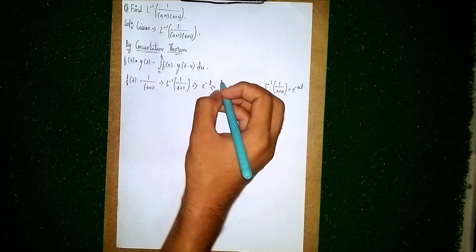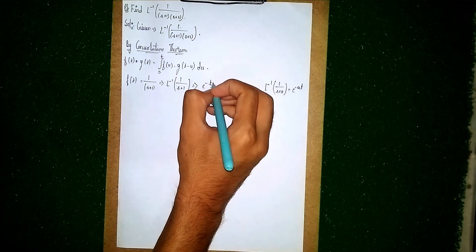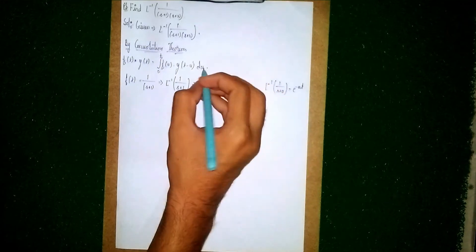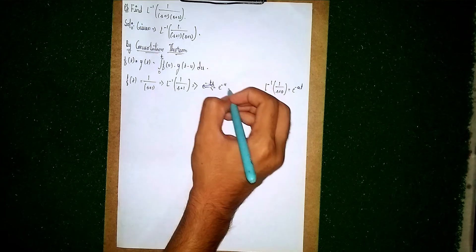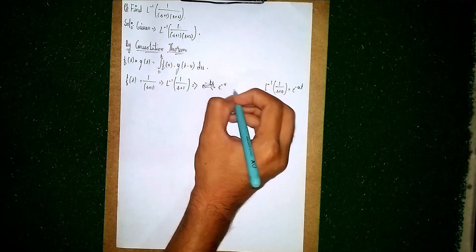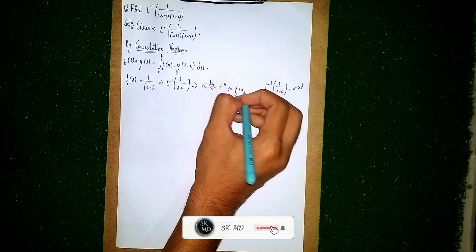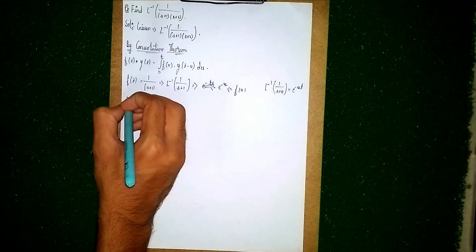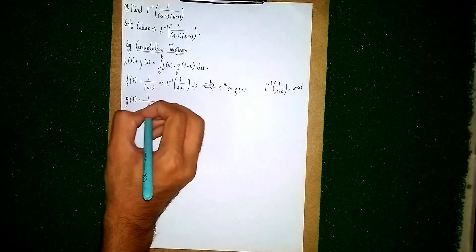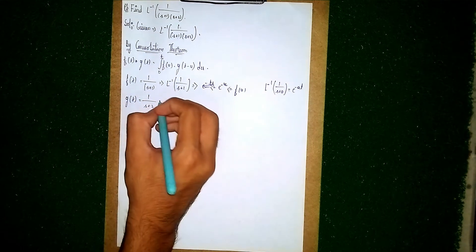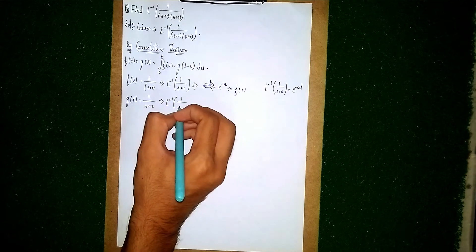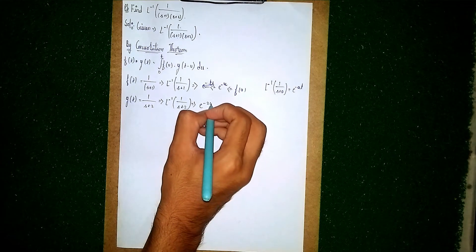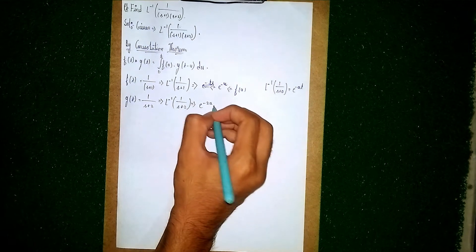So f(u) becomes e to the power minus u, because we are integrating with respect to u. This is our f(u). Then for g(t): g(t) equals inverse Laplace of 1 by (s+2), which gives g(u) equals e to the power minus 2u.